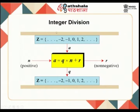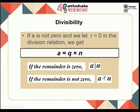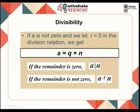In integer division we always say A = Q × N + R, where Q is an integer, N is a positive integer, and R is a non-negative remainder. This remainder R is what is most commonly used in cryptographic algorithms.